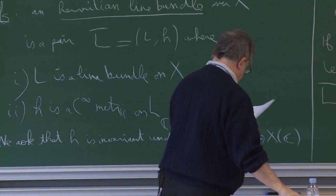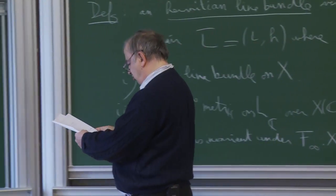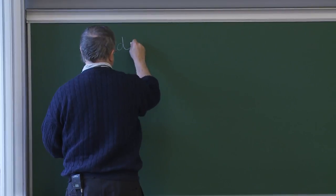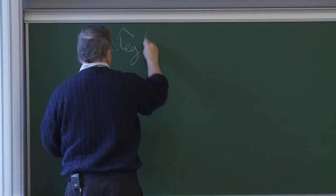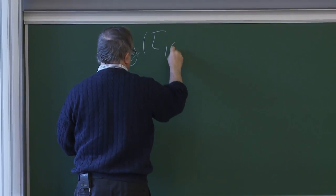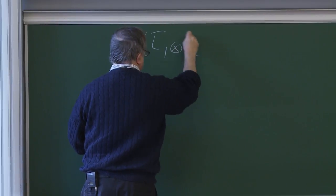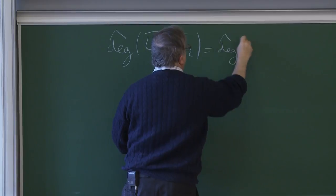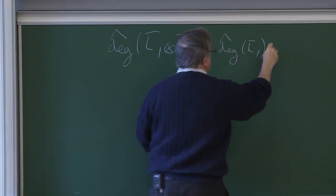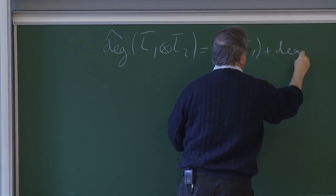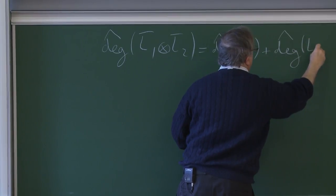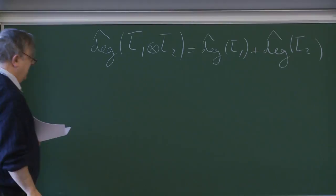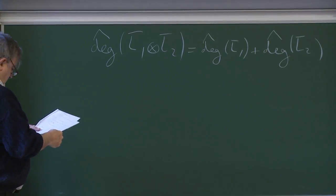So the degree enjoys nice properties. Namely, it is additive: the degree of the tensor product of L1 with L2 is the degree of L1 plus the degree of L2.